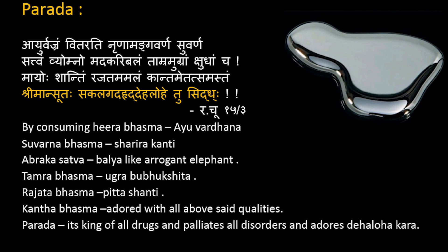On this reference, in case a person wants to increase his life expectancy because he is suffering from various disorders, he is supposed to add Hirakabhasma. A person who wants to increase his inner glow or healthiness should take Swarnabhasma. A person who wants to become stronger and stable like an elephant should take Abraka Sattva. A person who wants to increase Bubhukshata — his appetite — should take Tamrabhasma. Till here I have come in detail, and I will try to cross analyze.